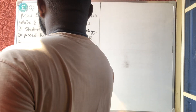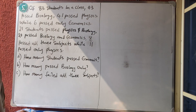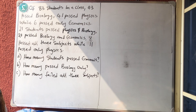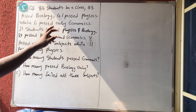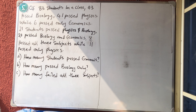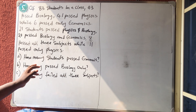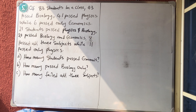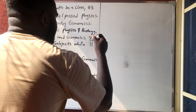To solve this simple set problem: of 83 students in a class, 43 passed Biology, 41 passed Physics, while 6 passed only Economics. 21 students passed Physics and Biology, 20 passed Biology and Economics, 8 passed all three subjects, while 11 passed only Physics. Now let us draw the Venn diagram.